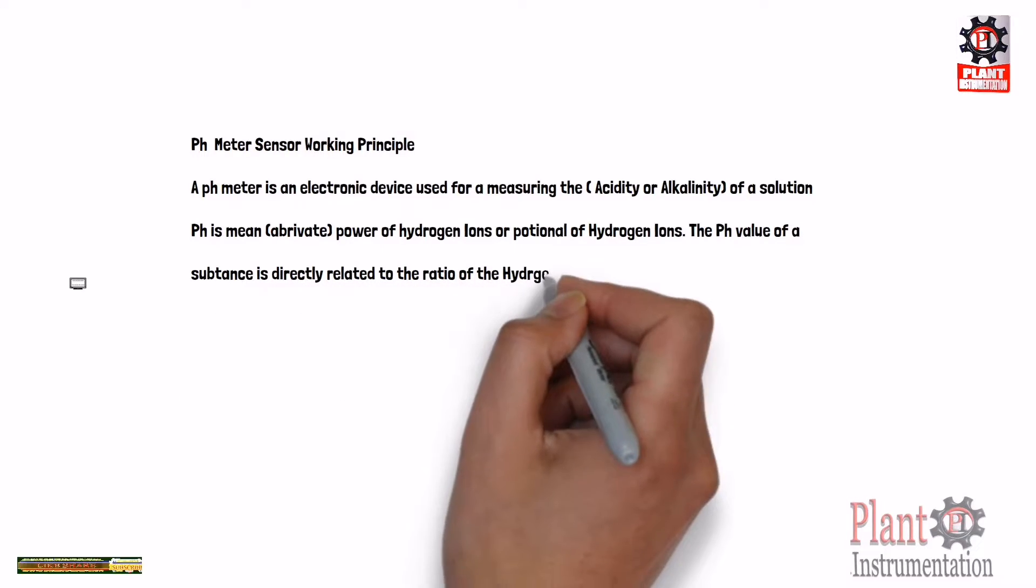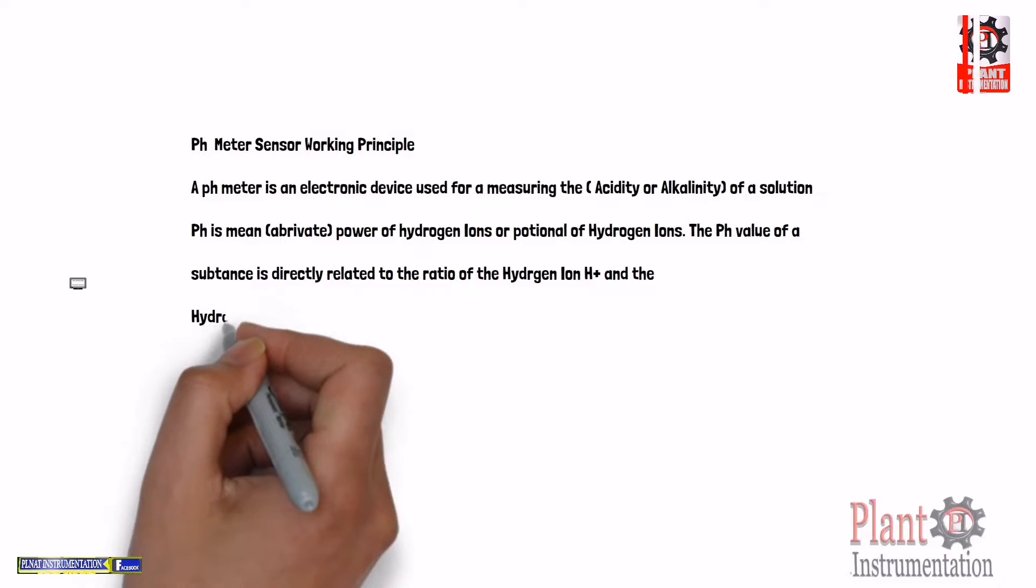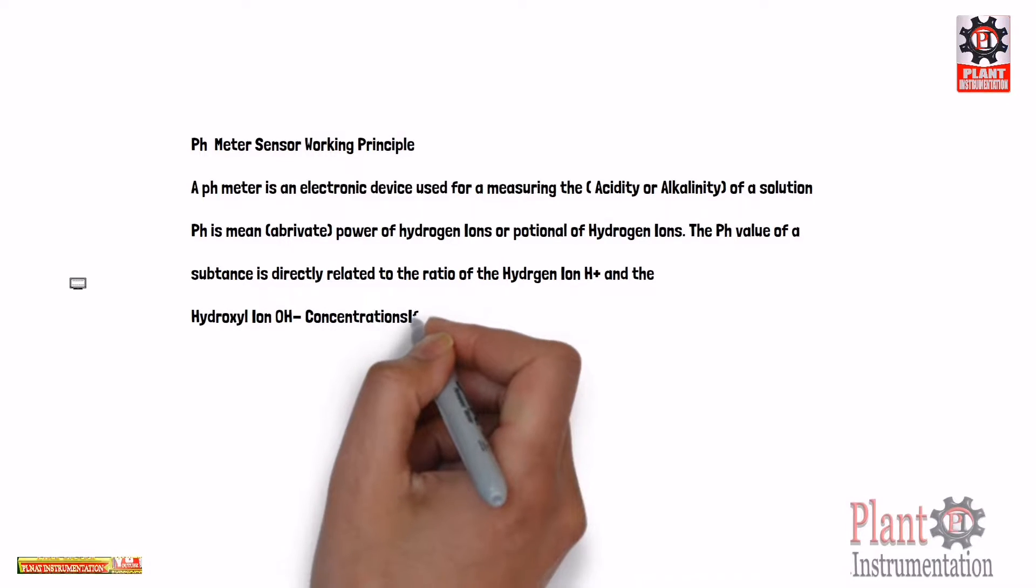If the H+ concentration is greater than OH-, the material is acidic.